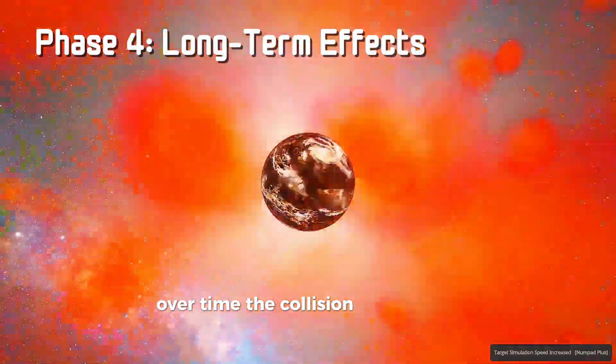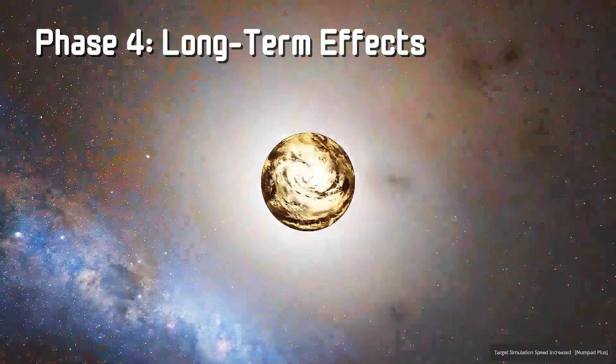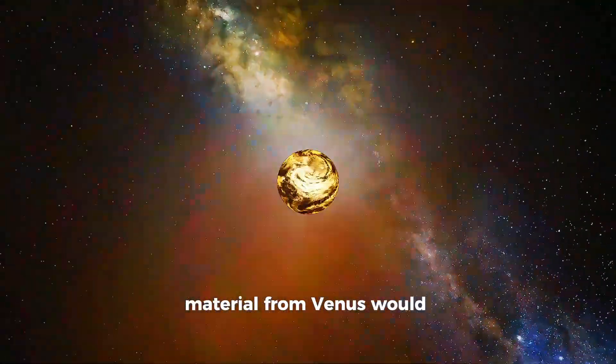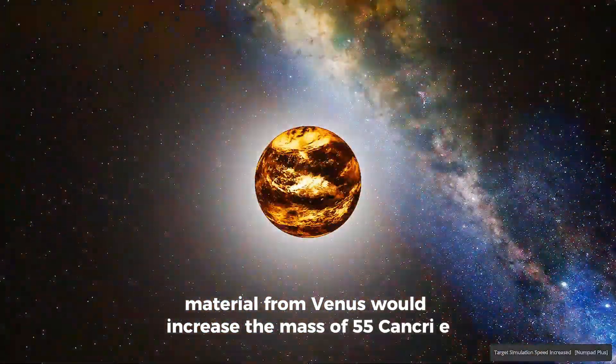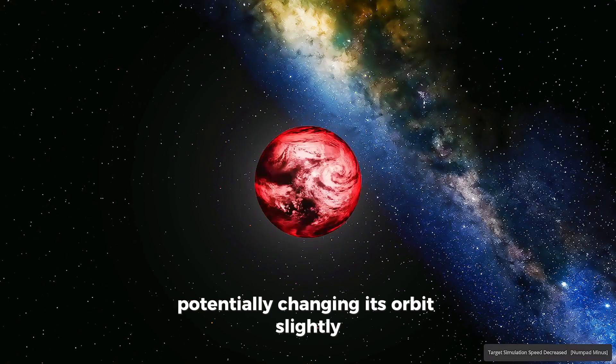By the time the collision would alter the planet's composition, the additional material from Venus would increase the mass of 55 Cancri E, potentially changing its orbit slightly.